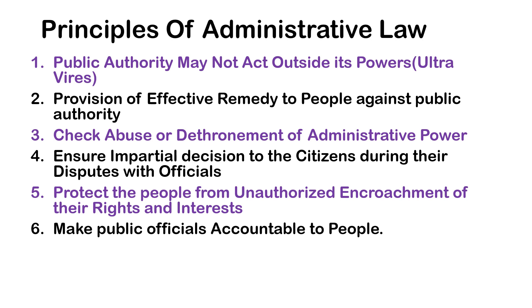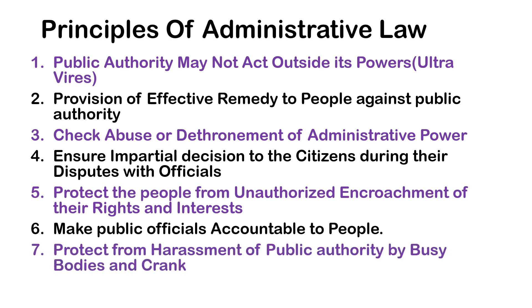Make public officials accountable to people. Accountability for the exercise of public power lies at the heart of democratic government. Mechanisms should be developed for political and legal accountability. There should be transparency in activities of public officials related to public administration. Citizens' charters and public hearings are examples of being accountable towards the people. Protect from harassment of public authority by busybodies and cranks. Public officials may face many barriers and obstacles while carrying out administration. In such cases, judicial reform can be made and applied. Judicial reforms are based on what is right.